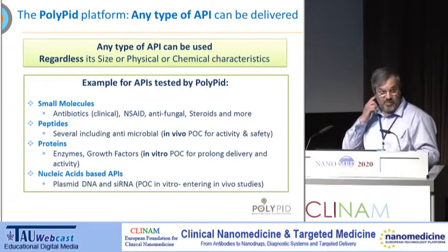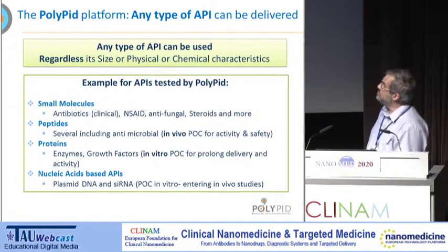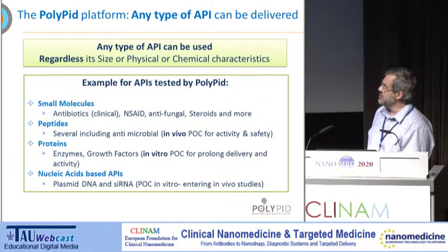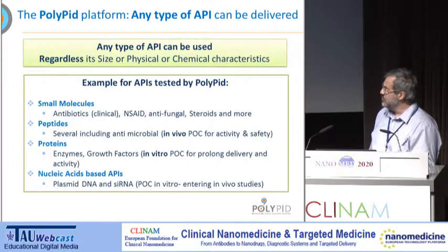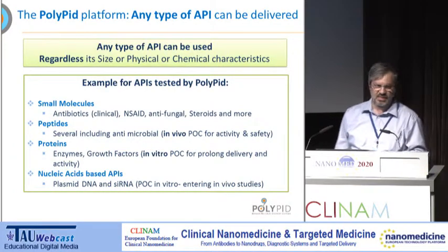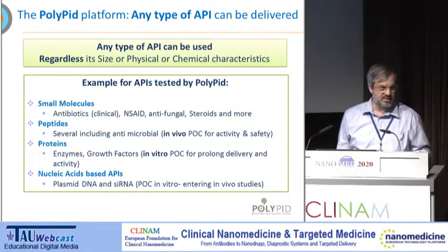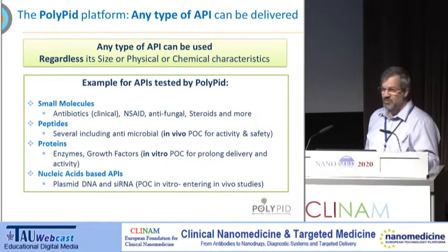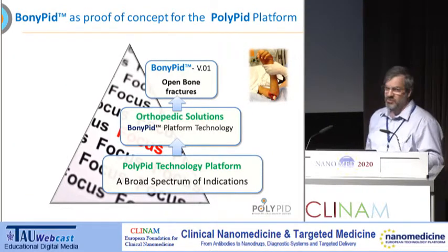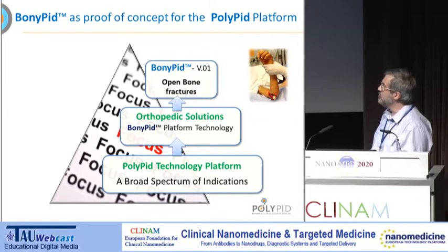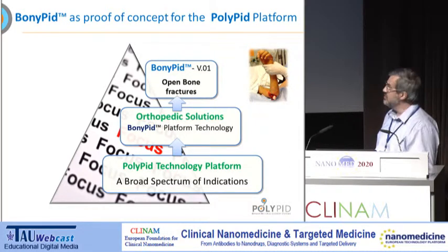What type of API can be used? Basically any type we tested — starting with small molecules, antibiotics, and others, peptides, proteins, and even nucleic acids like siRNA. So it's a very wide platform. You can do many things, but you need to focus. Our focus is orthopedic solutions, and within orthopedics we are concentrating on Bonipid, which I will now present.